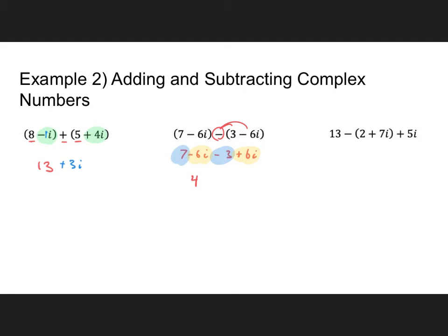For the last problem, I distribute through the negative sign so I don't have to think so hard. Then I combine my like terms. I have 13 minus 2, which is 11. And then I have negative 7i plus 5i — I accidentally dropped the i there, so let me fix that. That should be minus 7i plus 5i, which gives me minus 2i. Final answer: 11 minus 2i.